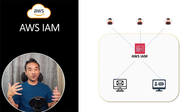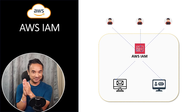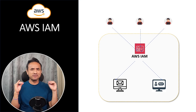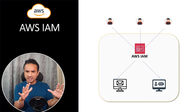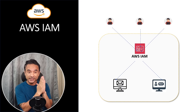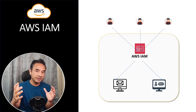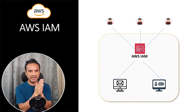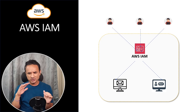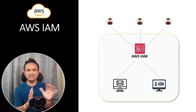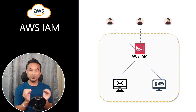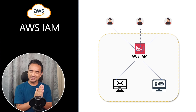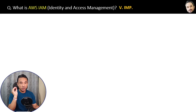AWS IAM — Identity and Access Management — is a very important concept in AWS. In this video, I will show you how AWS IAM helps you secure your applications from hackers and scammers. I will use clear and simple diagrams with a step-by-step approach so that you can confidently explain this concept to anyone, because AWS IAM is a very commonly asked topic. Let's start — what is AWS IAM?